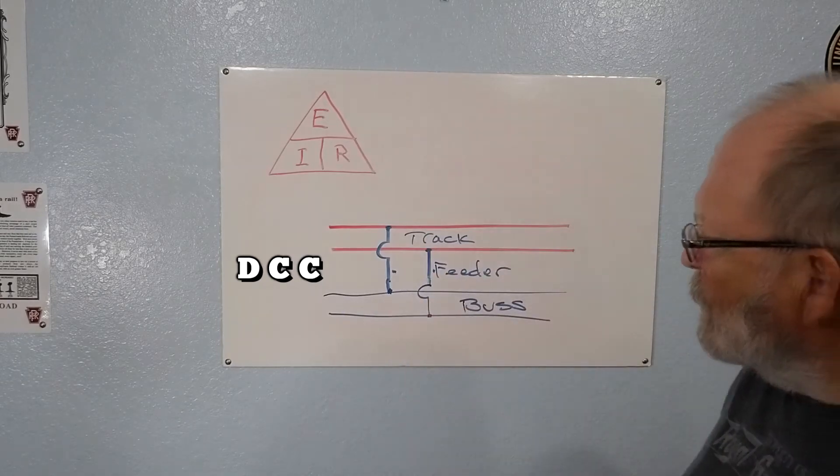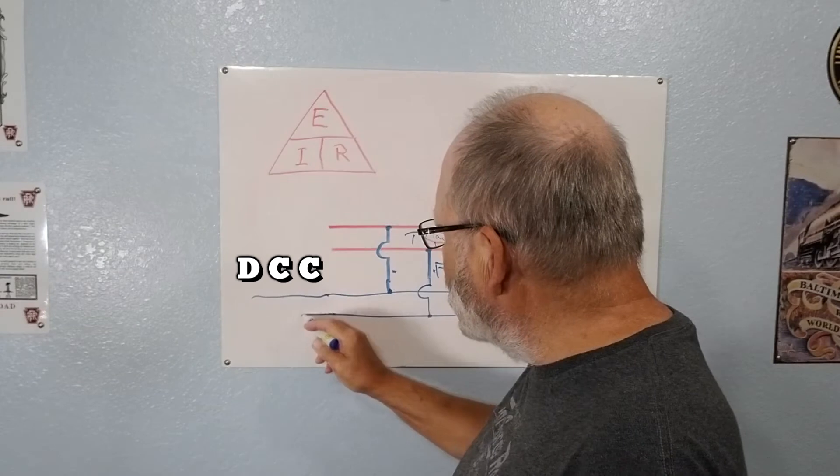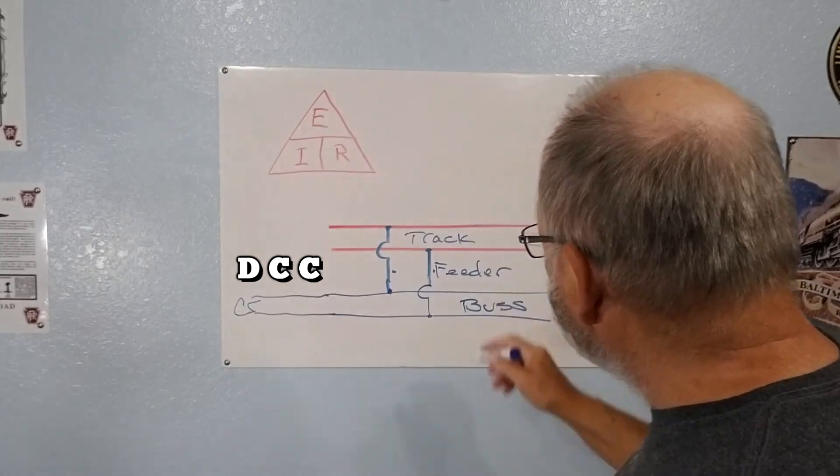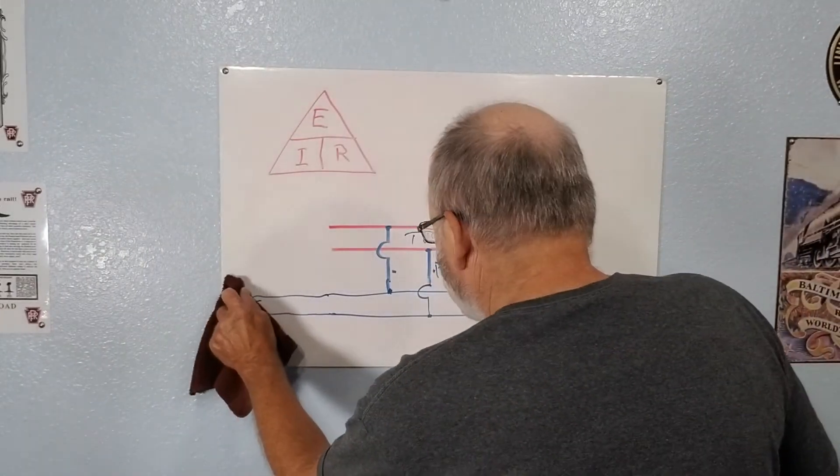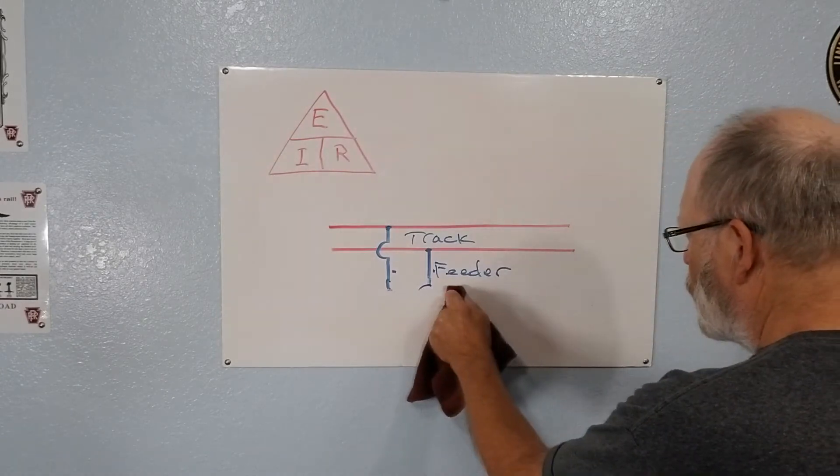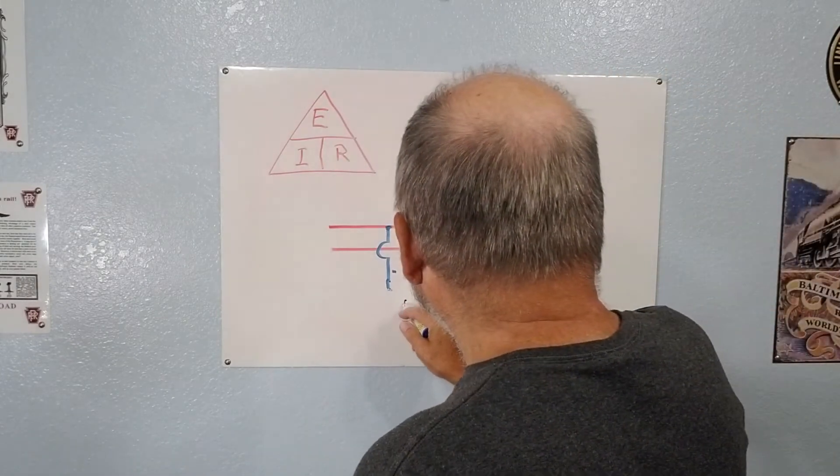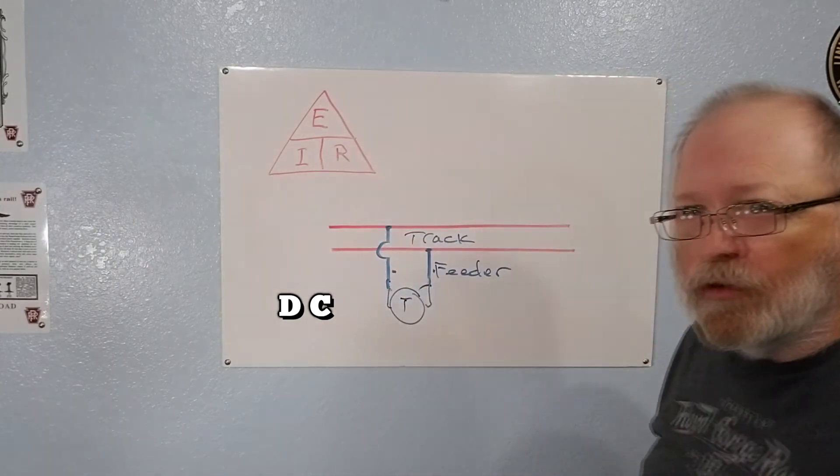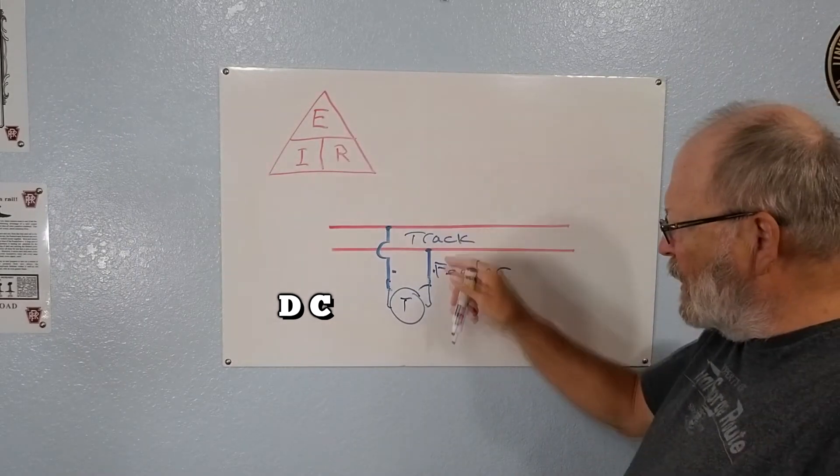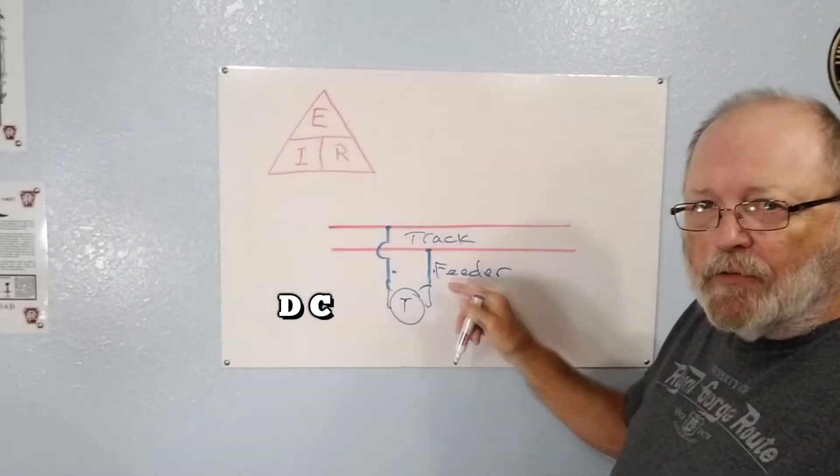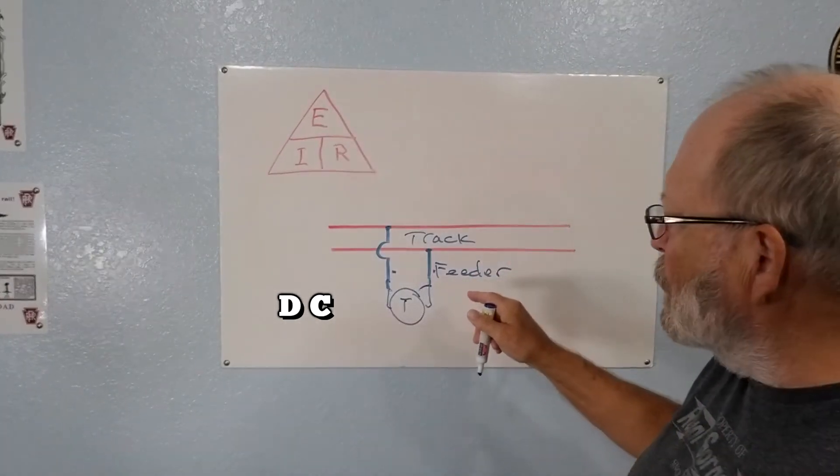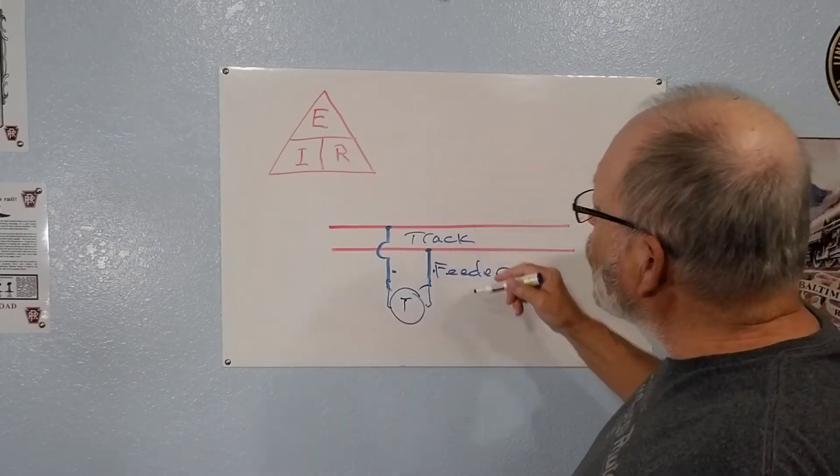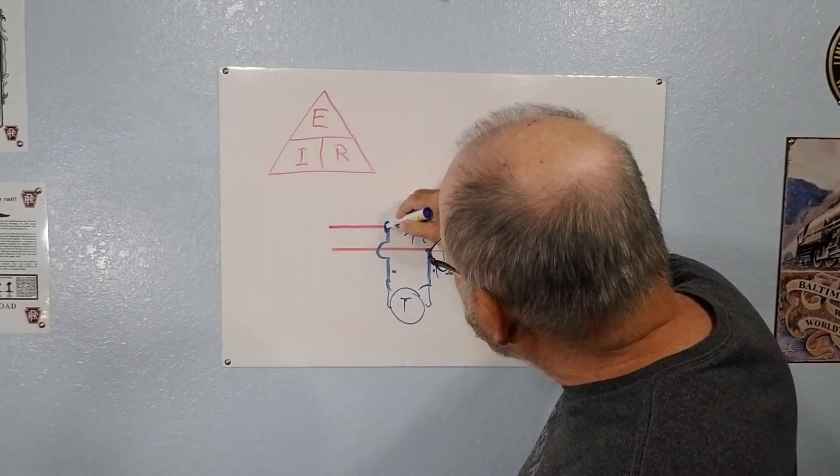So that's the same thing here, you got your track, you got your feeder wires right here and then you got your bus wires right here and then somewhere along the line down here you got your command station or if you're doing DC, you have your transformer right there. So basically this is what you're going to be looking at for the very first time whenever you're hooking up your tracks and you're going to wonder what is going on, what are all these things about.